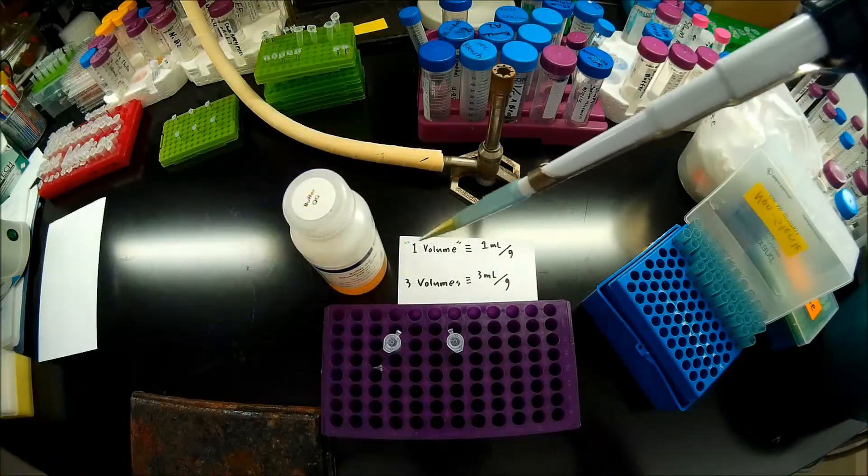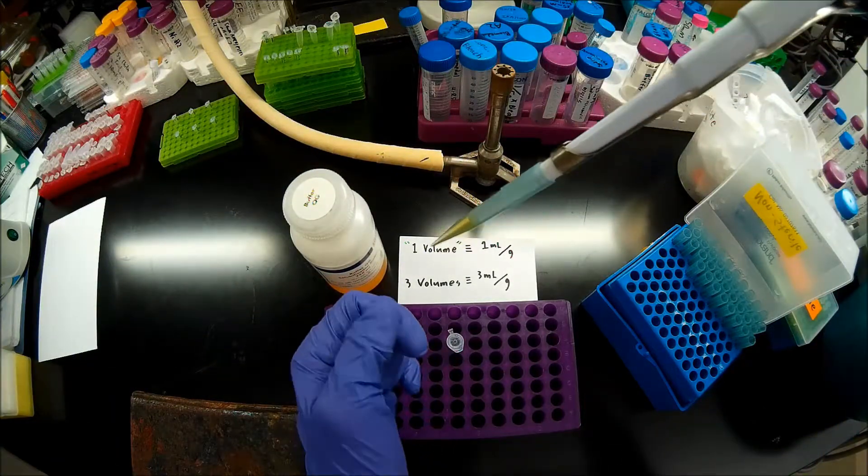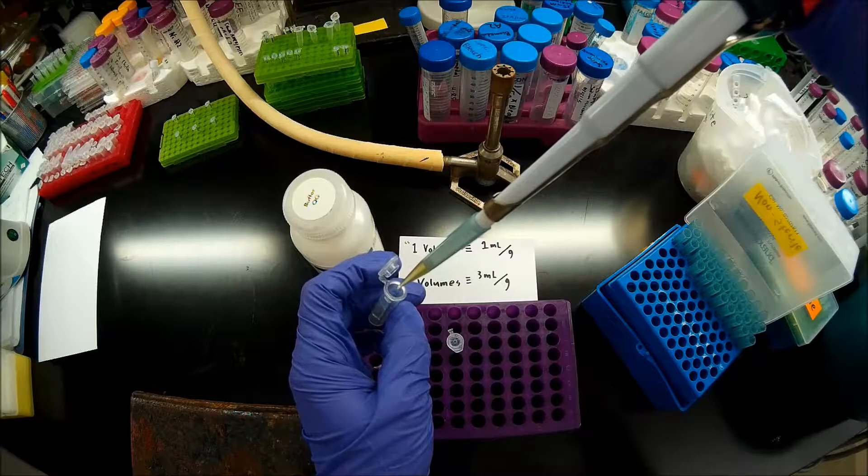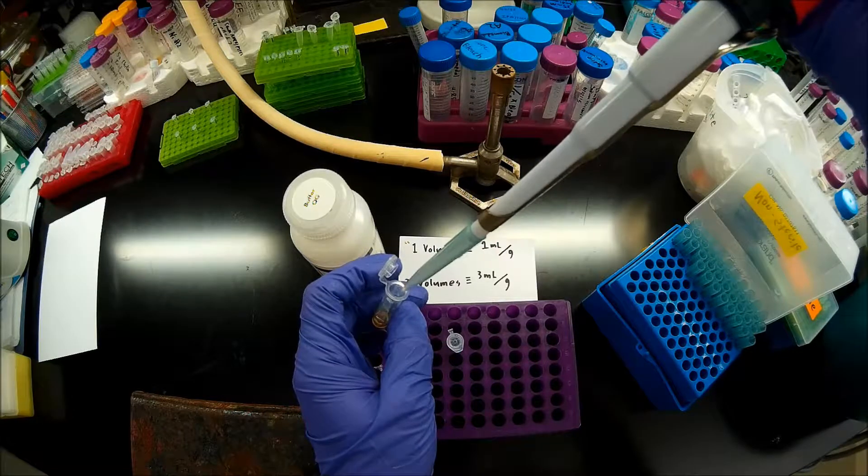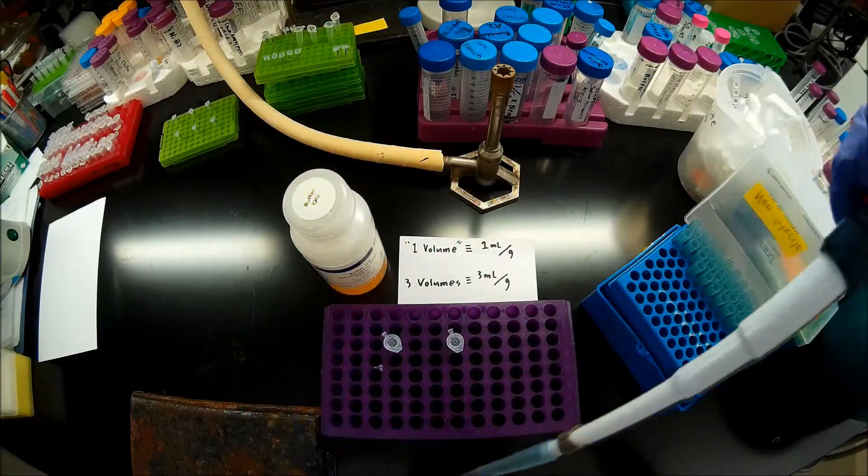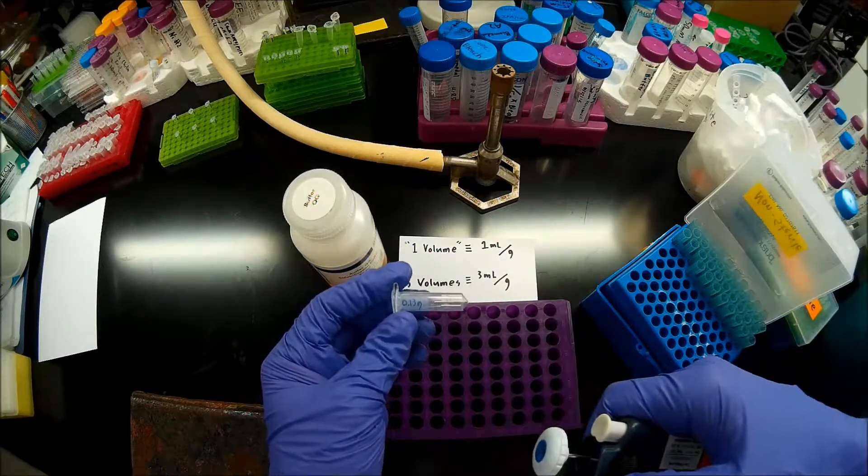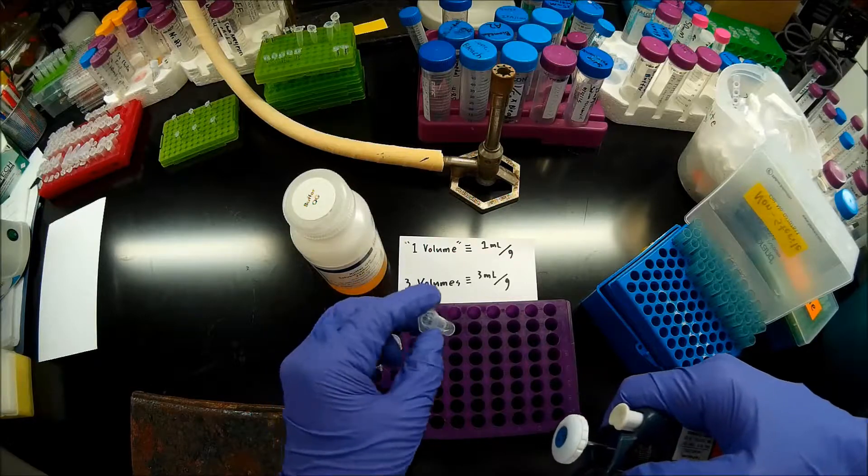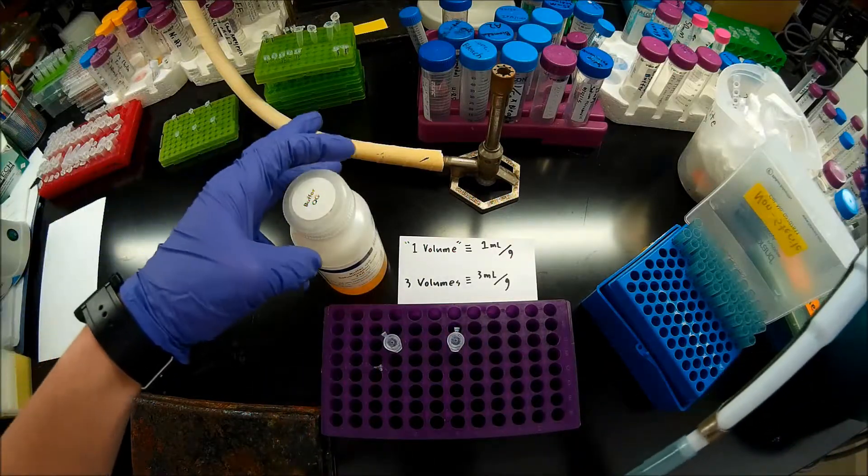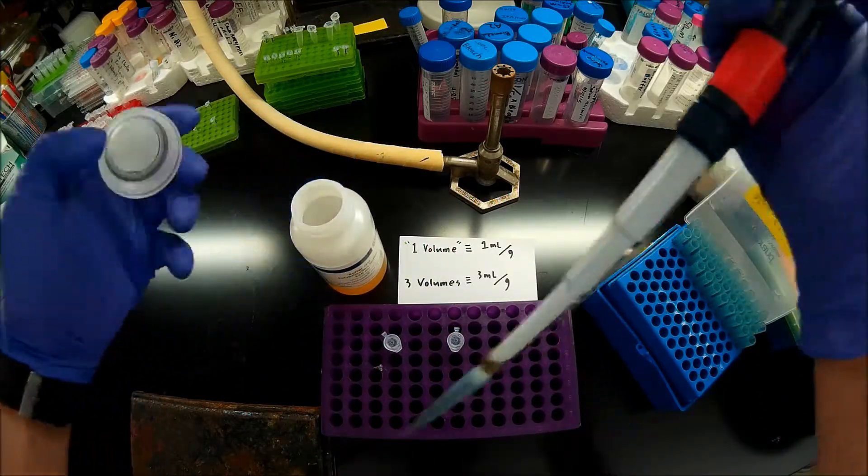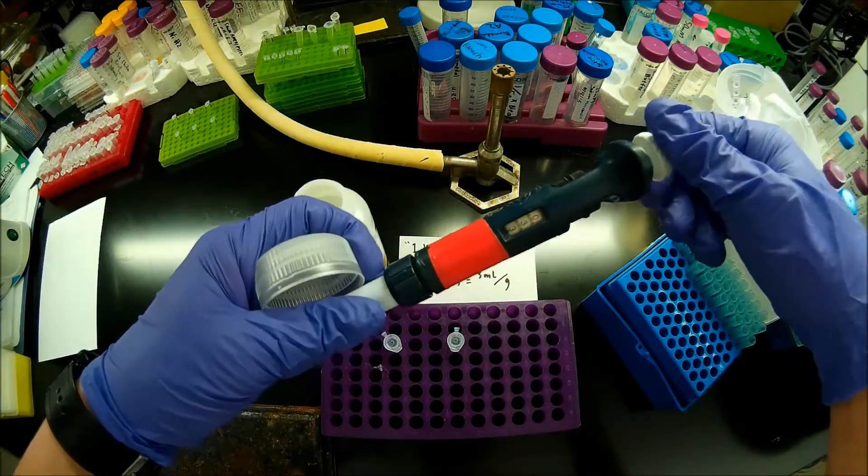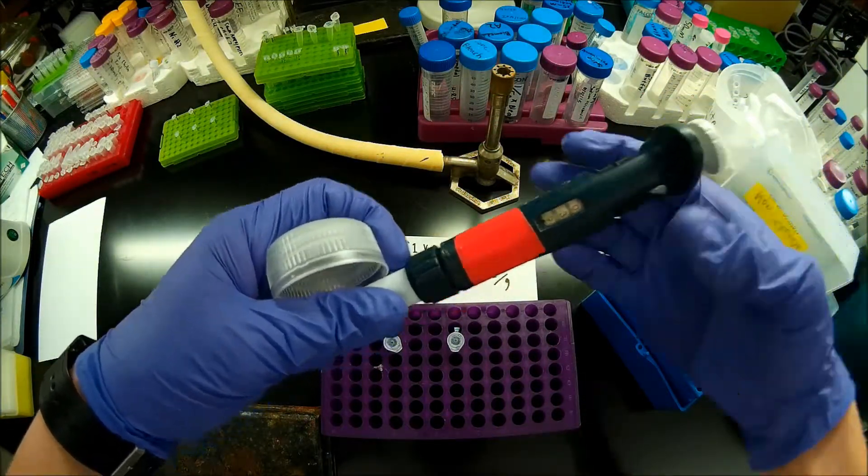The QG buffer contains guanidine thiocyanate, which is going to lower the melting temperature of the agarose slabs. So when we put it in a 50 degree water bath, it will melt. And this next sample contains 0.13 grams of agarose slab. So that's going to be 0.39 mils or 390 microliters.